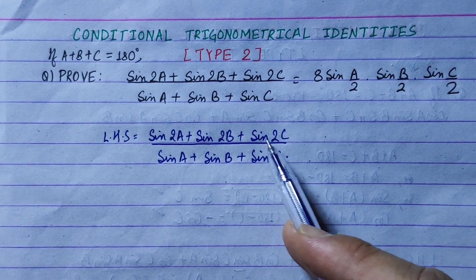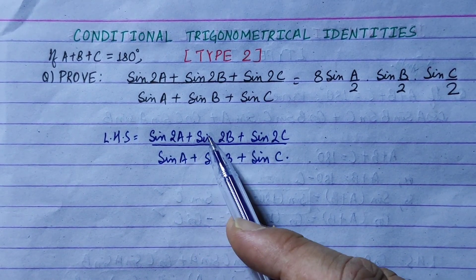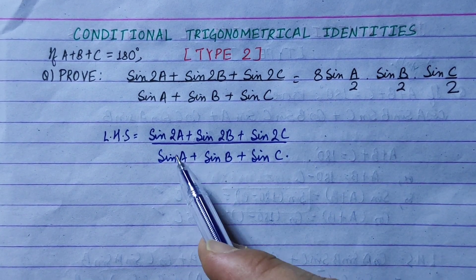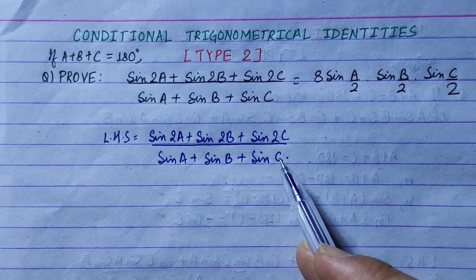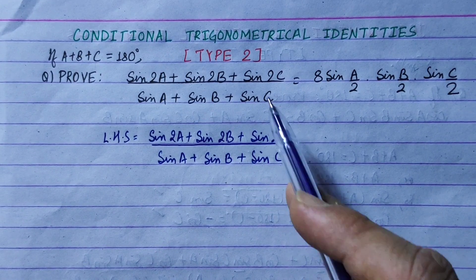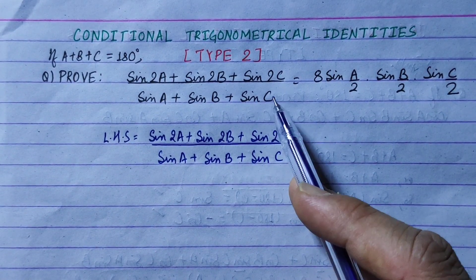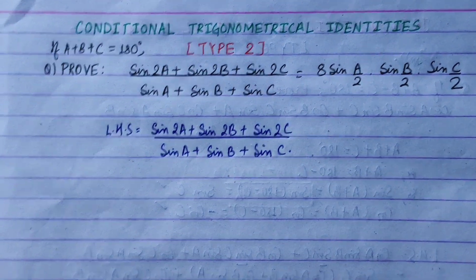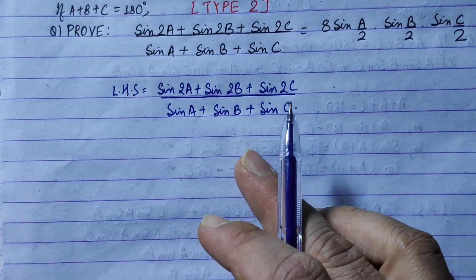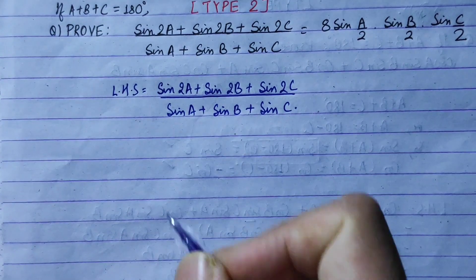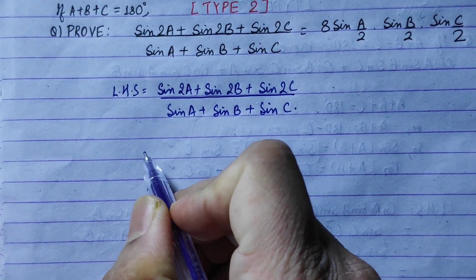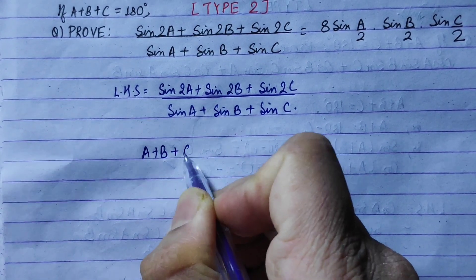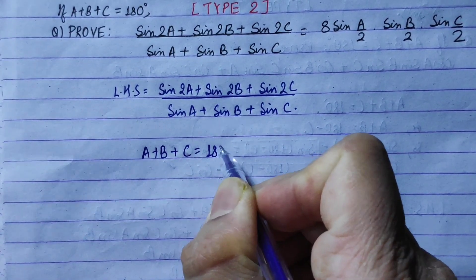We are going to take the LHS. Notice that sin2a + sin2b + sin2c is the numerator, and sinA + sinB + sinC is the denominator. The condition given is a plus b plus c equals 180 degrees.